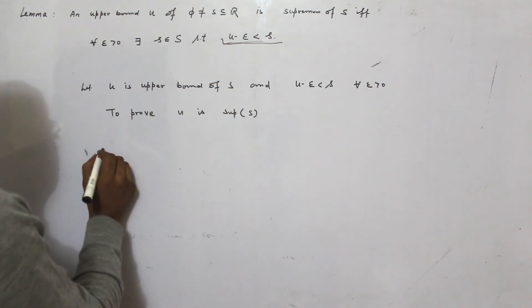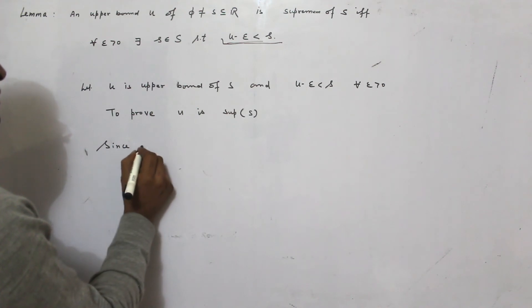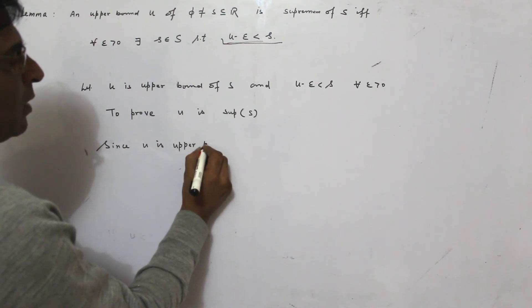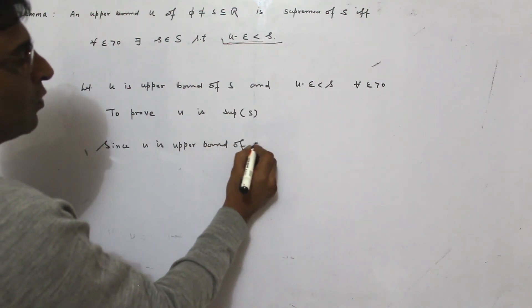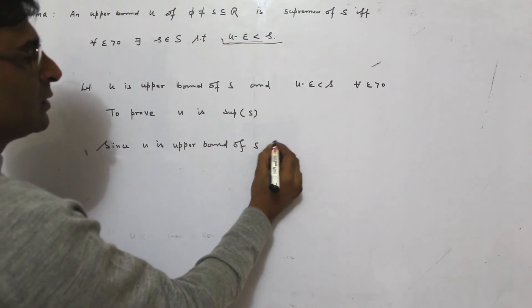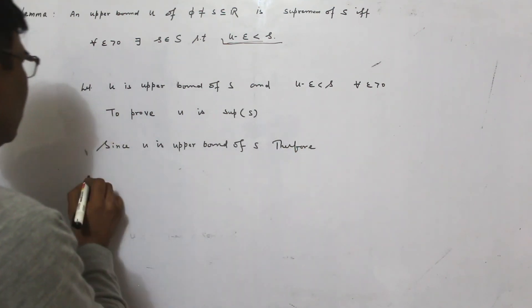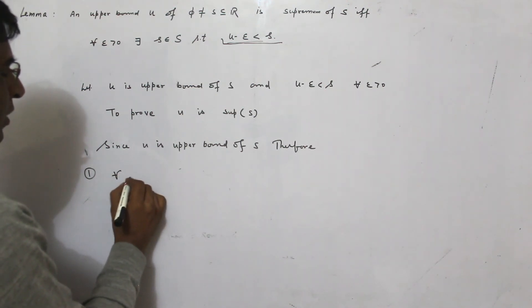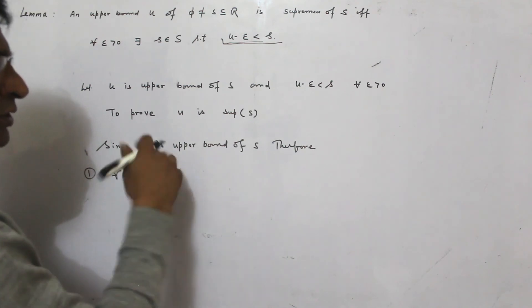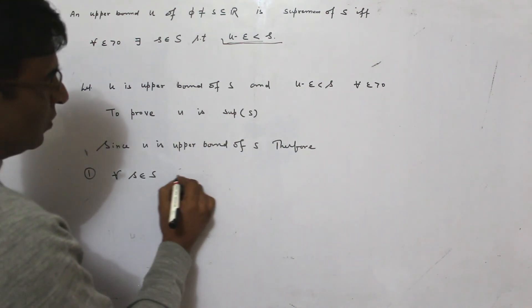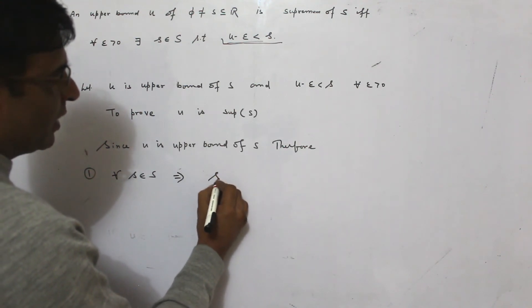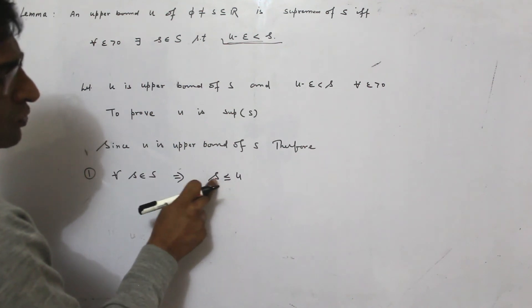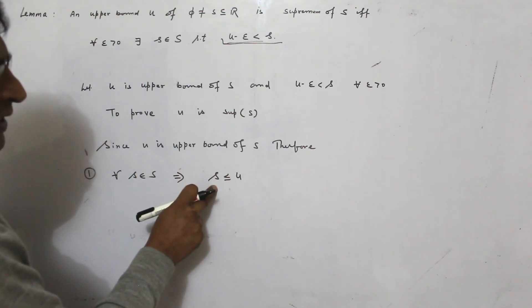Since U is an upper bound of S, therefore for all s belonging to S — because it is upper bound of S — we have s is always less than U. Because it is upper bound, so all s will be lesser than U.